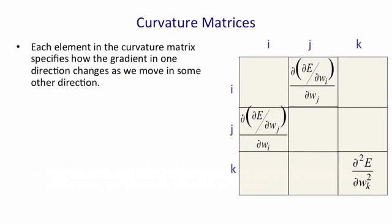So curvature matrices look like this. For each weight, WI or WJ, they tell you how the gradient in one direction changes as you change in another direction. In other words, as I change weight I, how does the gradient of the error with respect to weight J change? That's what a typical off-diagonal term tells you. The terms on the diagonal tell you how the gradient of the error changes in the direction of a weight as you change that weight.